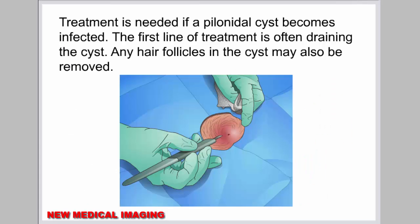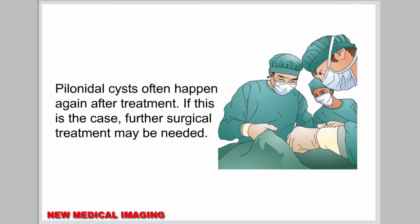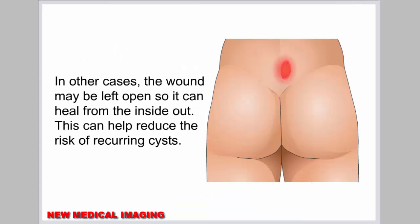Treatment is needed if a pilonidal cyst becomes infected. The first line of treatment is often draining the cyst. Any hair follicles in the cyst may also be removed. After a cyst is drained, sometimes dead skin and tissue are removed to improve the rate of healing. Pilonidal cysts often happen again after treatment; if this is the case, further surgical treatment may be needed. Most cases require removal with surgical treatment. During surgery, the entire cyst is removed to help prevent the cyst from reforming. In some cases the wound is closed right away, while in other cases the wound may be left open so it can heal from the inside out, helping reduce the risk of recurring cysts.